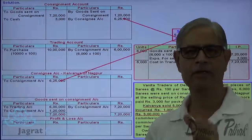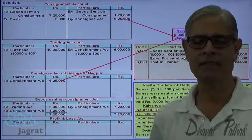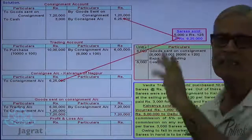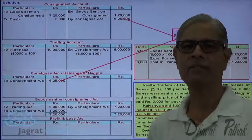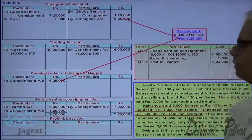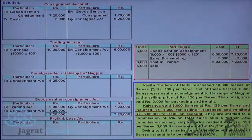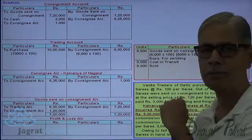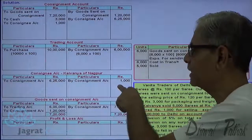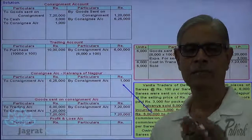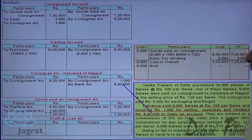The consignment account is a functional account whose purpose is to find out the profit from consignment activity. All goods sent and expenses incurred for this consignment activity get debited. Sales proceeds and stock get credited to the consignment account, and by that we find the profit. Now, ₹1,000 selling expenses: entry is consignment account debit to consignee account credit, because the consignee paid this expense on behalf of the consignor. For the remittance of ₹5 lakhs received: cash/bank account debit to consignee account credit.